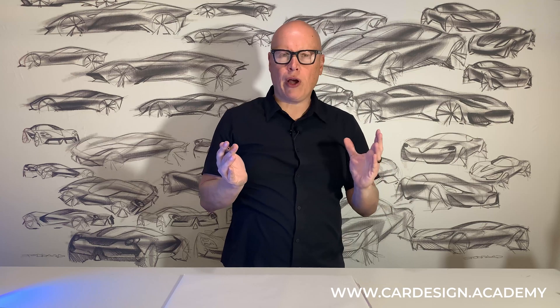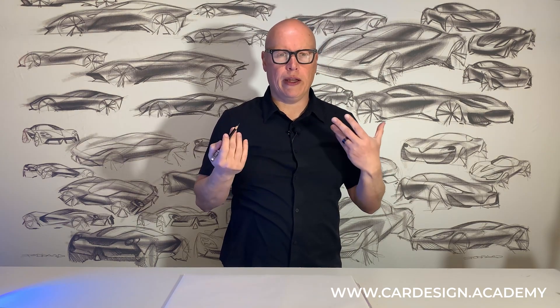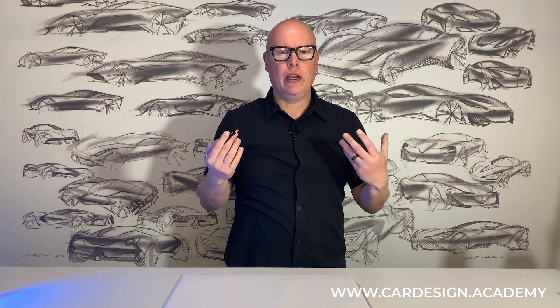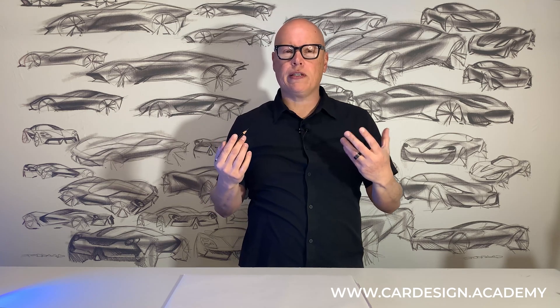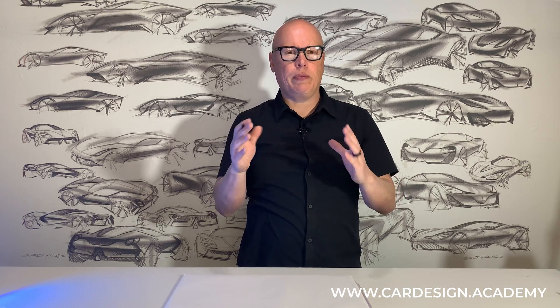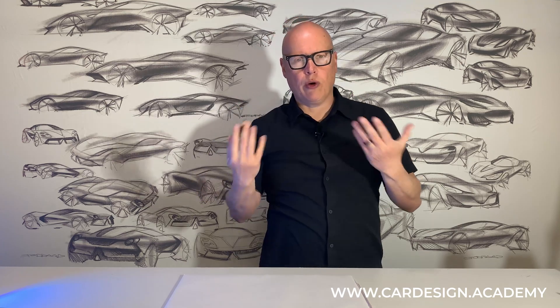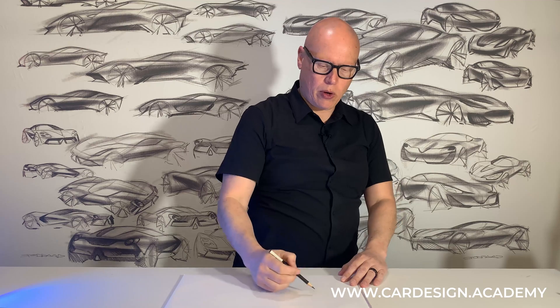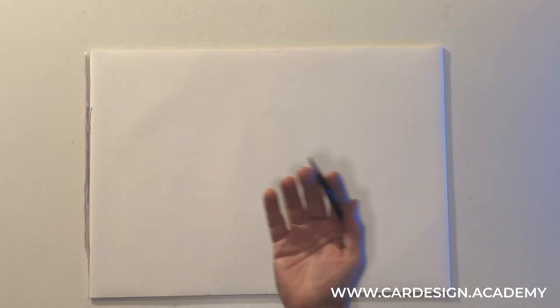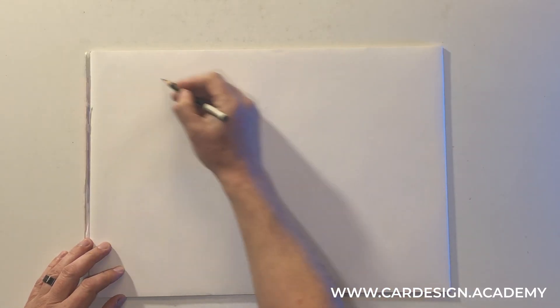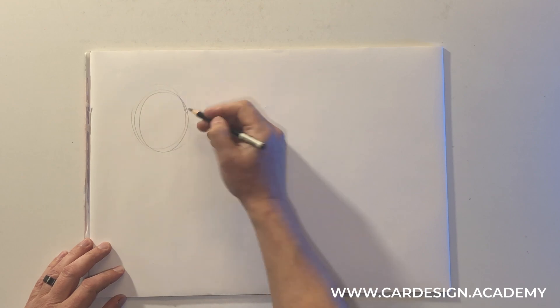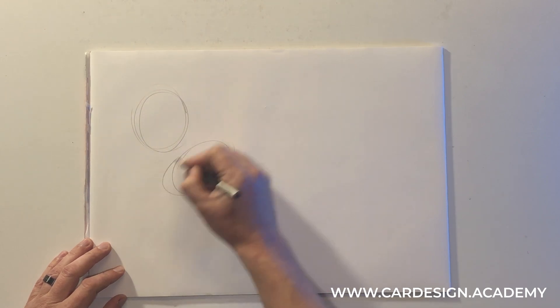We're going to be talking a little bit about how ellipses work and how to get different kinds of ellipses. Some ellipses are more open, almost circular, and some are more closed. We're going to start with a quick warm-up exercise, drawing a series of ellipses just kind of randomly placed on the page at different orientations.